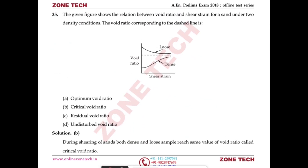Question number 35: the figure shows the relation between void ratio and shear strain for sand under two density conditions — loose soil (upper curve) and dense soil (lower curve). The dashed line corresponds to the void ratio where both converge to a constant value, which is the critical void ratio. Answer: B.